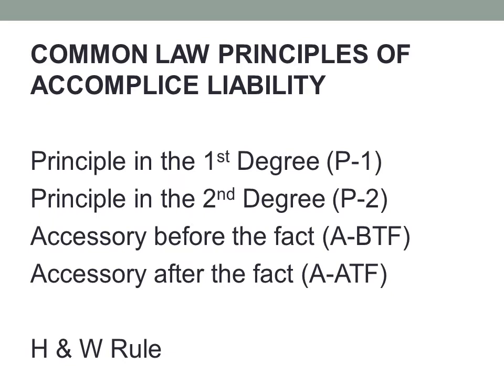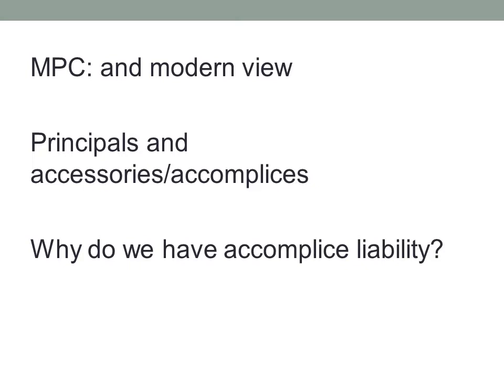The modern view — the Model Penal Code and federal rules — eliminated the accessory after the fact category. Now there are just two categories: principals and accomplices (or in some states, accessories). An accomplice is responsible for the same crime as the principal, and their liability is derivative from the principal's liability. They don't even have to commit the crime themselves.